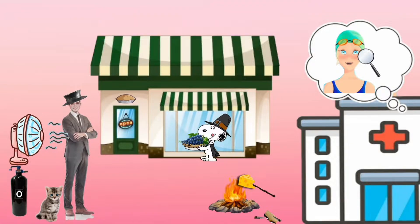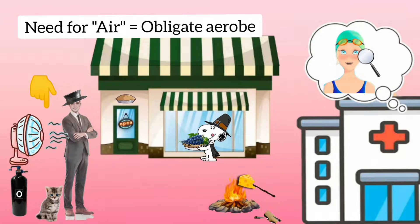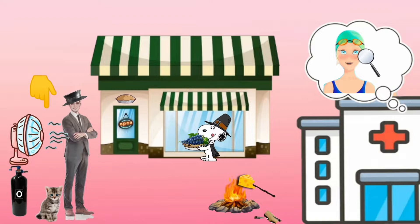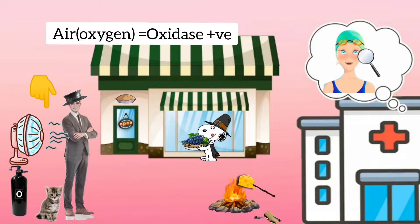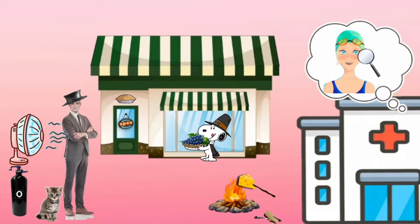This gentleman wearing a suit is always in need of air, so this tells us it is an obligate aerobe. Air contains oxygen, so it follows oxidative metabolism and does not show fermentation.